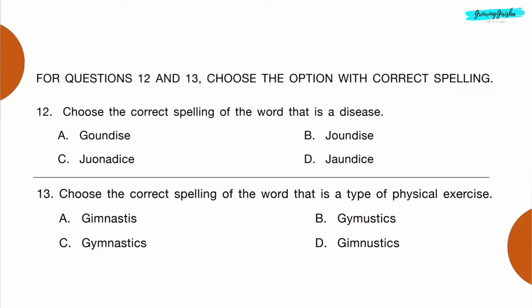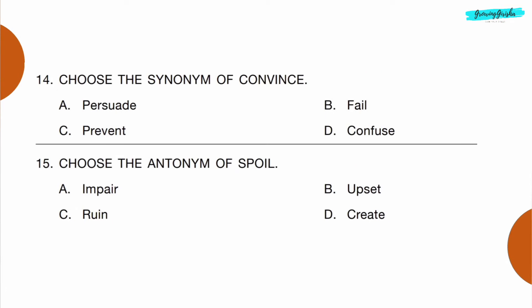For questions 12 and 13, choose the option with correct spelling. Question 12: Choose the correct spelling of the word that is a disease. Option D: J-A-U-N-D-I-C-E, jaundice. Question 13: Choose the correct spelling of the word that is a type of physical exercise.